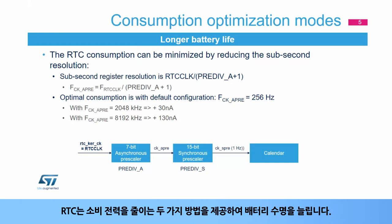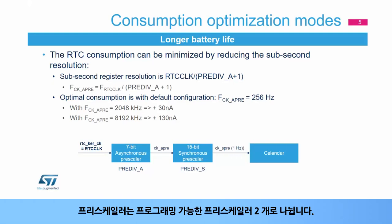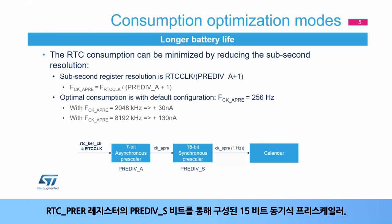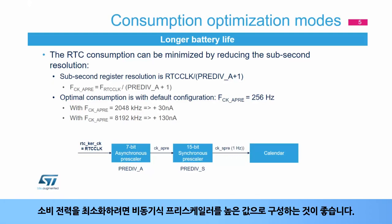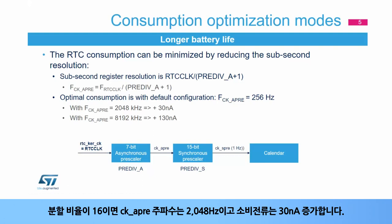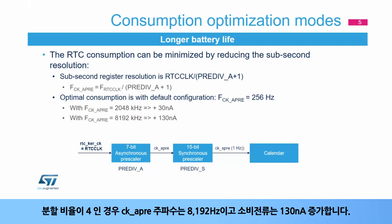The RTC offers two ways to reduce consumption, thus increasing battery life. The pre-scaler is split into a 7-bit asynchronous pre-scaler configured through the pre-diva A bits, and a 15-bit synchronous pre-scaler configured through the pre-div S bits of the RTC pre-R register. It is recommended to configure the asynchronous pre-scaler to a high value to minimize consumption. With a divide ratio of 128, the CKA pre-frequency is 256 Hz, which is the optimal configuration. With a divide ratio of 16, consumption increases by 30 nA; with a divide ratio of 4, it increases by 130 nA.